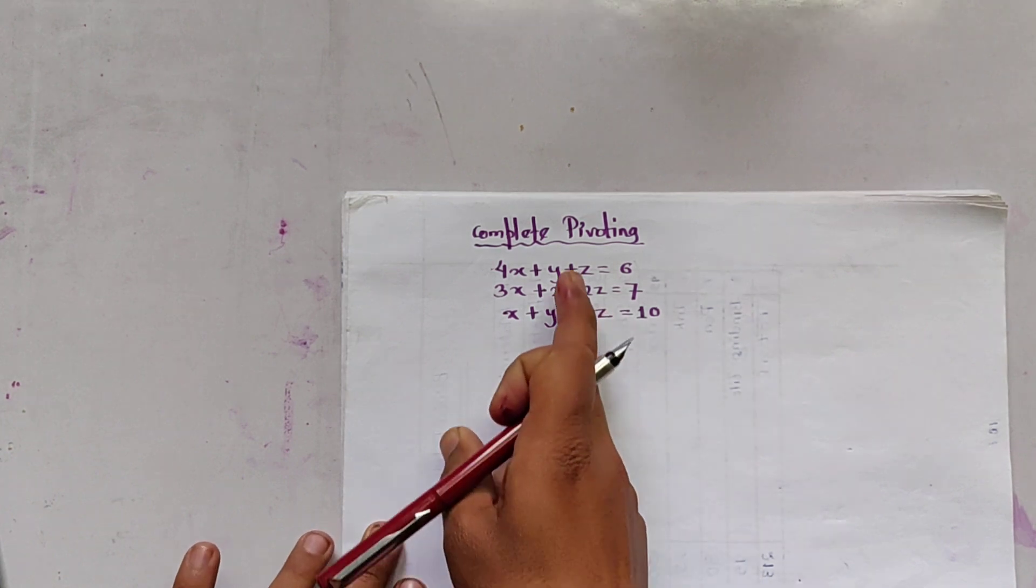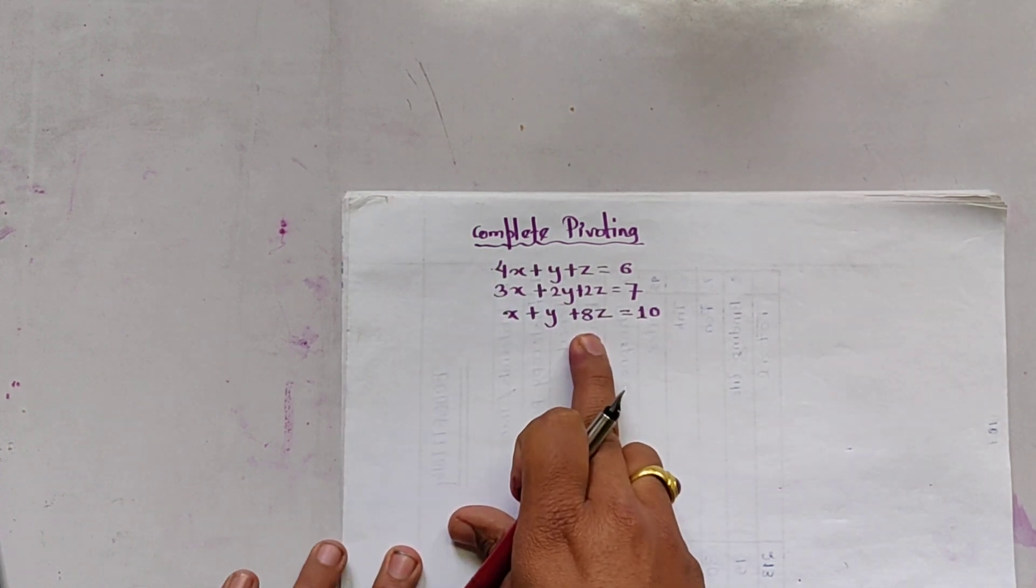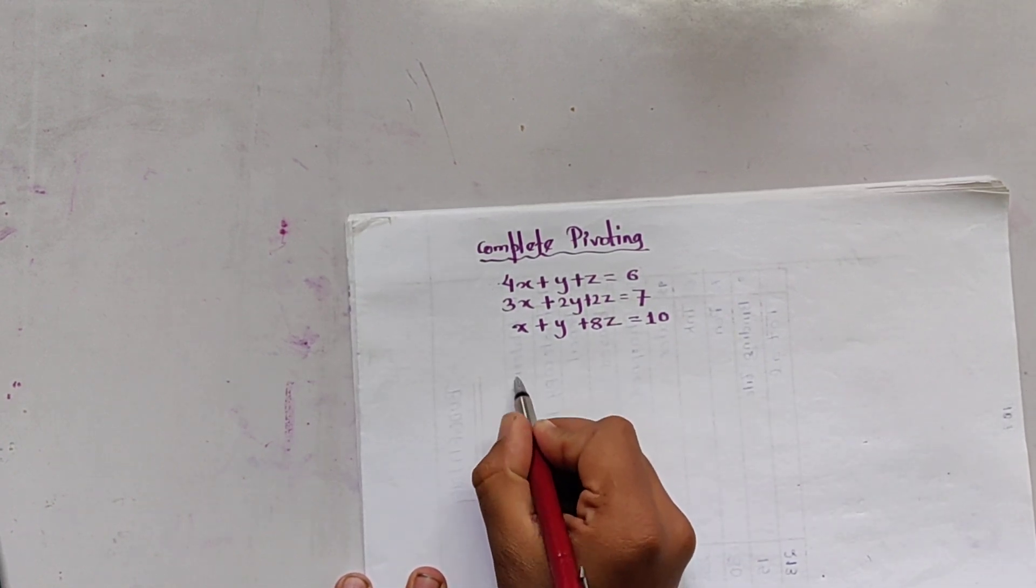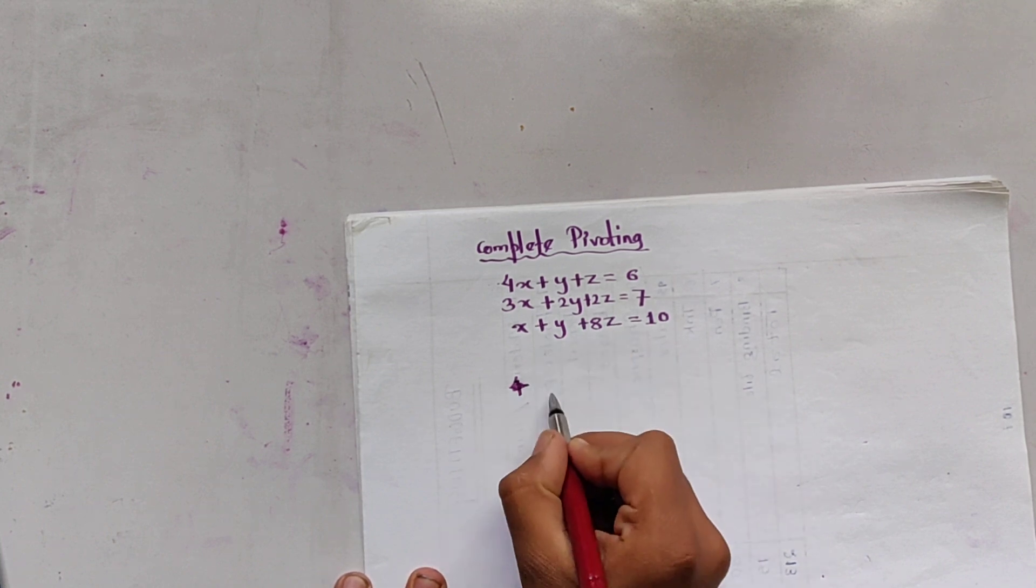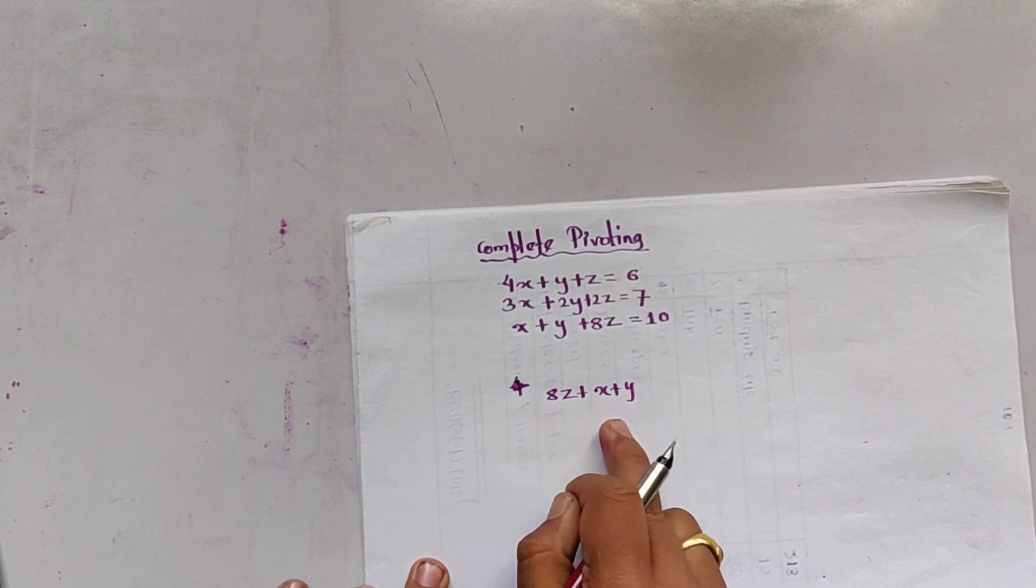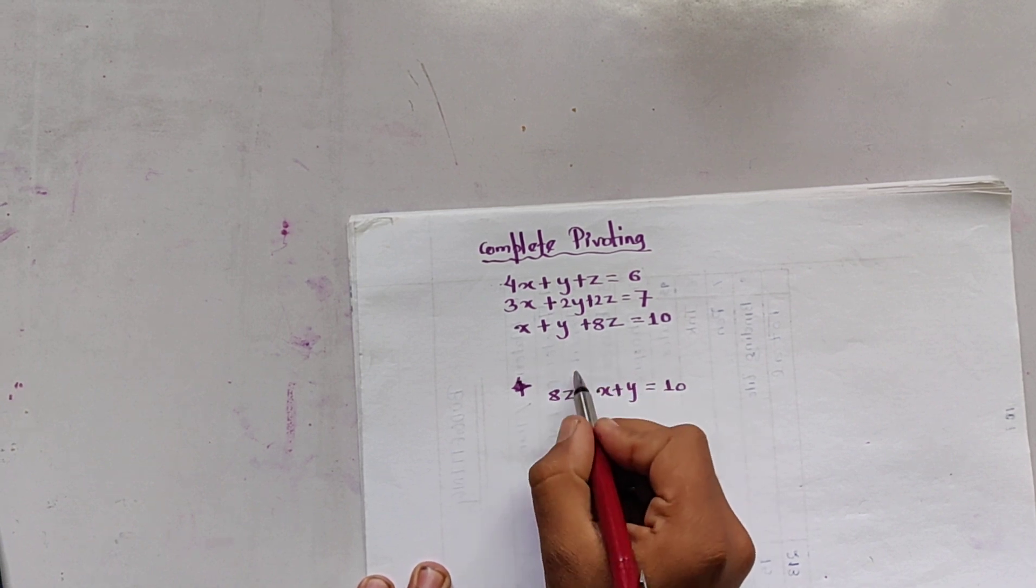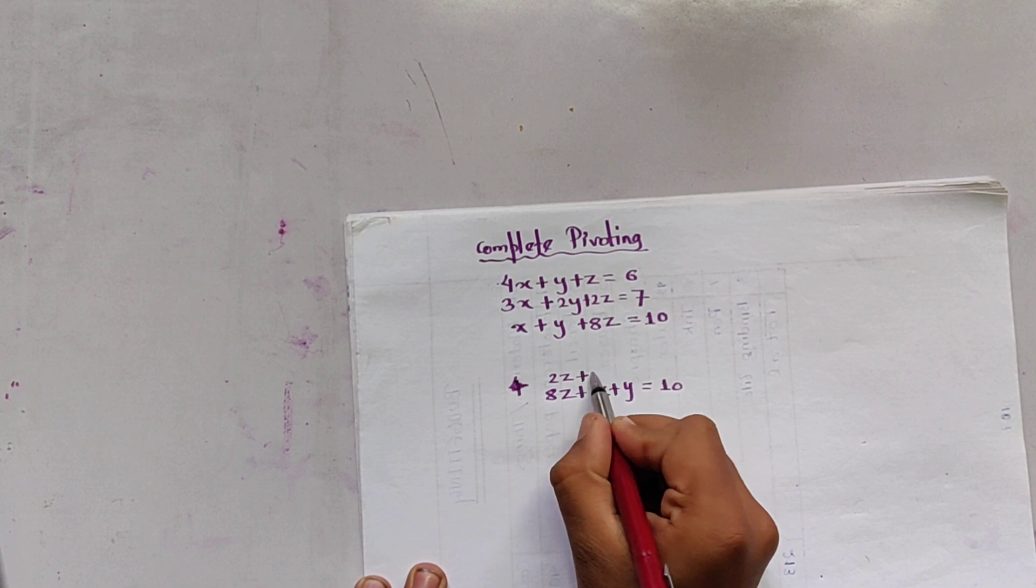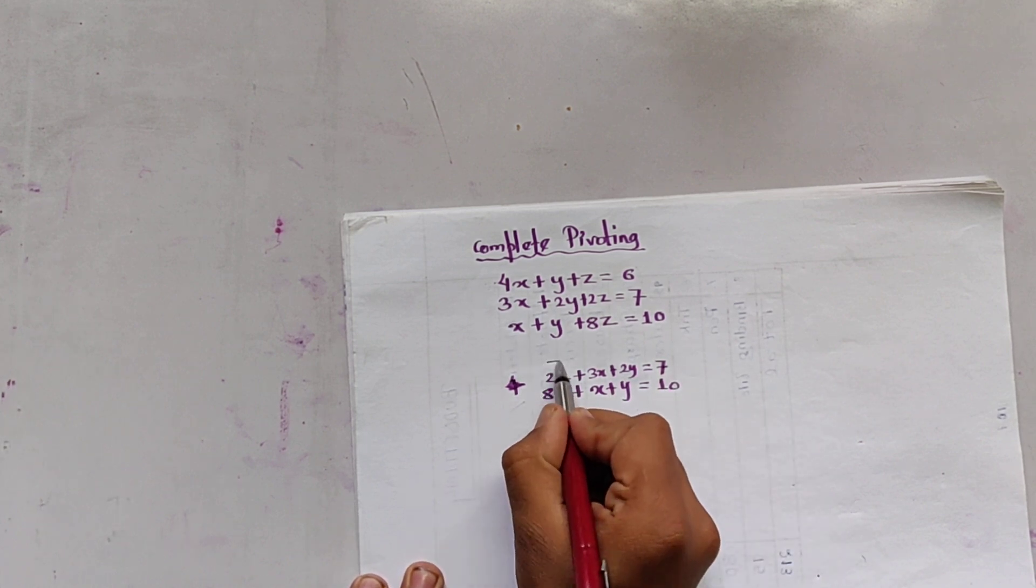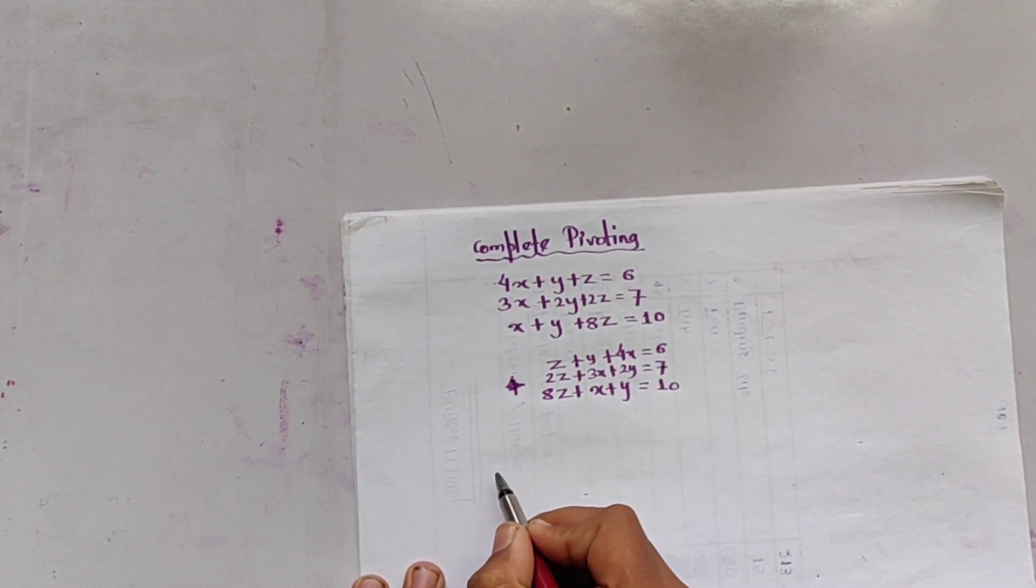In complete pivoting method, we have to check the coefficients of x, y, and z. The maximum coefficient is 8. So the z part is brought forward. It can be written as 8z plus x plus y equals 10, then 2z plus 3x plus 2y equals 7, and z plus y plus 4x equals 6.